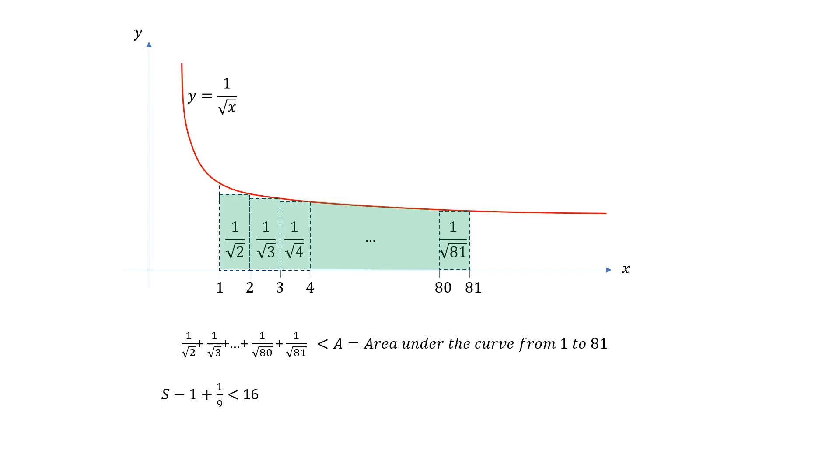This summation as you can see has one less term in the beginning and one extra term at the end. It is in fact missing 1 and has an extra term of 1 over root 81.